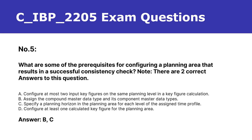Number 5. What are some of the prerequisites for configuring a planning area that results in a successful consistency check? Note: there are two correct answers to this question. A. Configure at most two input key figures on the same planning level in a key figure calculation. B. Assign the compound master data type and its component master data types. C. Specify a planning horizon in the planning area for each level of the assigned time profile. D. Configure at least one calculated key figure for the planning area. Answer: B, C.